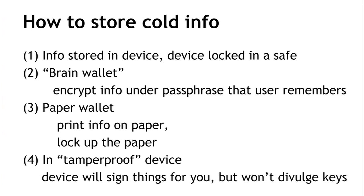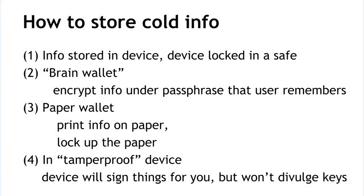The second method is called a brain wallet. In a brain wallet, we take the information we want to protect and encrypt it under some kind of passphrase or password that a user remembers. To get the information back later, we ask the user to give the passphrase and then decrypt. If the crypto is done correctly and the user picked a good passphrase, the security will be as good as the security of the passphrase — as long as the adversary can't guess it.